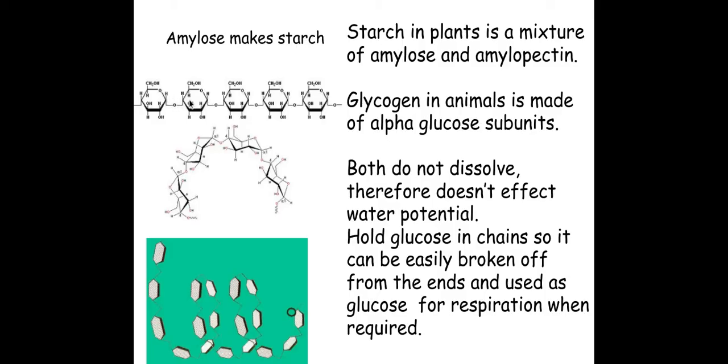Because we've got this alpha 1 to 4 glycosidic bond, it means that this amylose is actually appearing in a coiled like structure. Because of these alpha 1 to 4 glycosidic bonds, I get this nice coiling structure of my amylose.